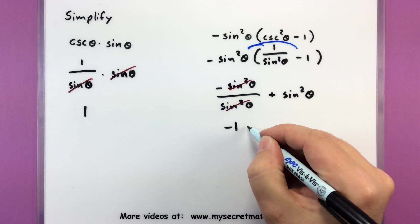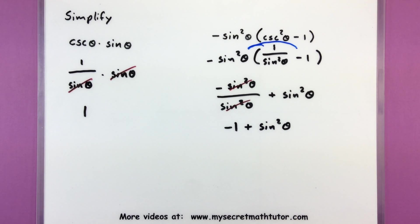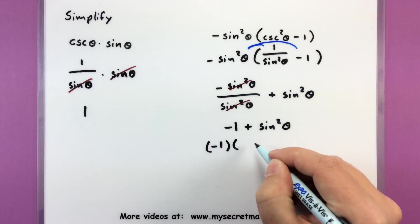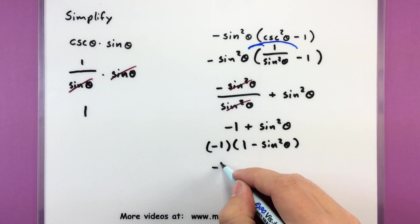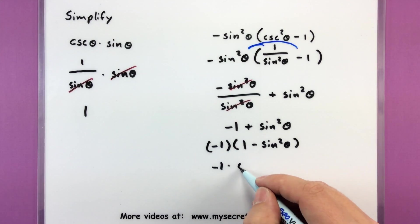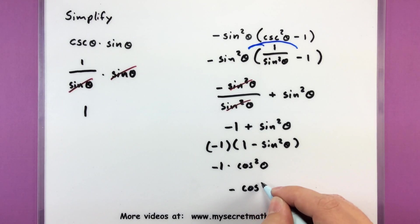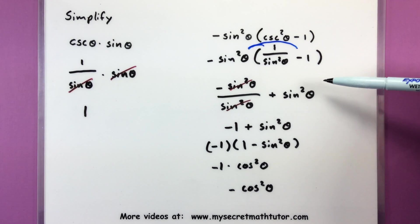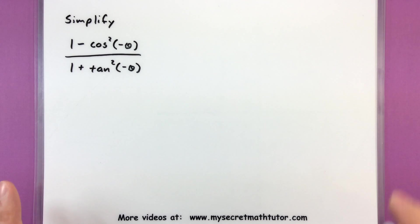Now I have negative 1 plus sine squared of theta, and it feels an awful lot like a Pythagorean identity — it's not quite though. Things are just mixed up a little bit. Let's take out a negative 1, so that gives us negative 1 times the quantity 1 minus sine squared of theta. And there's that Pythagorean identity — 1 minus sine squared equals cosine squared of theta. So negative 1 multiplied by cosine squared of theta, we can write that as negative cosine squared of theta. By writing cosecant in terms of sine, it gets our foot in the door and we can see what will cancel.